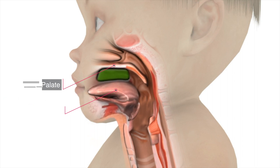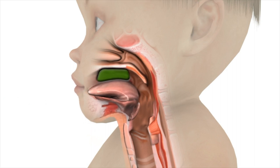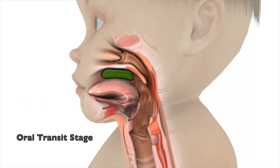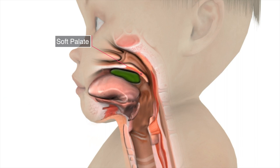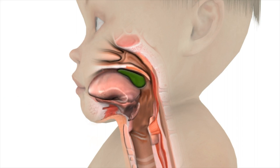Once the food bolus has been processed by the mouth, the oral transit stage begins with the tongue raising up against the hard palate while the back of the tongue drops to allow the bolus to move into the back of the mouth. Simultaneously, the soft palate raises up against the back, closing off the passageway into the nose and preventing any food or liquids from regurgitating back up into the nose.